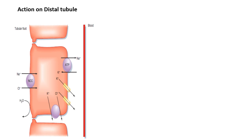Aldosterone has action on the distal tubule and also the collecting duct. On the distal tubule, there is a diagram of a tubular cell showing both sides — the luminal surface and the basal surface. Aldosterone helps sodium and chloride reabsorption from the luminal surface of the tubular cell to the blood.